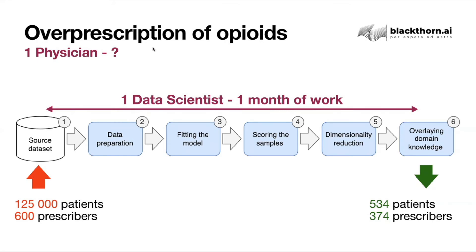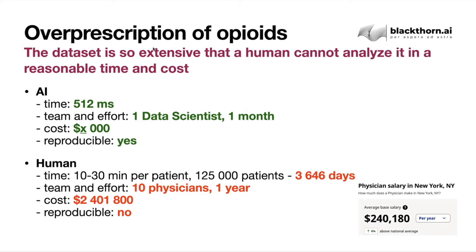To sum up, it took one data scientist one month to analyze 125,000 records of patients and 600 prescribers. As a result, we produced a much shorter list of 500 patients and 300 prescribers for further review by physicians. The cost of such analysis was X thousands of US dollars. The team consisted of one data scientist. The time of inference, when the models are ready and the pipeline is written, takes half a second. More importantly, the analysis is reproducible — whenever you receive additional data, you just rerun the algorithms and get updated results.